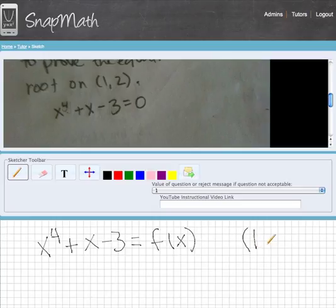So we're trying to prove by using the Intermediate Value Theorem that there is a zero or a root to this equation on the interval from 1 to 2.